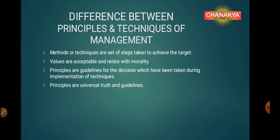Methods or techniques means the steps that are taken to achieve the target, and principles are the guidelines for decisions taken during the implementation of the techniques. Like, the target may be production of 10,000 units. The steps taken to make it successful can be increasing the manpower or increasing the working hours. It is also needful to understand the difference between principles and values. Values relate with morality, while the principles are universal — that means they can be applied to each and every situation.